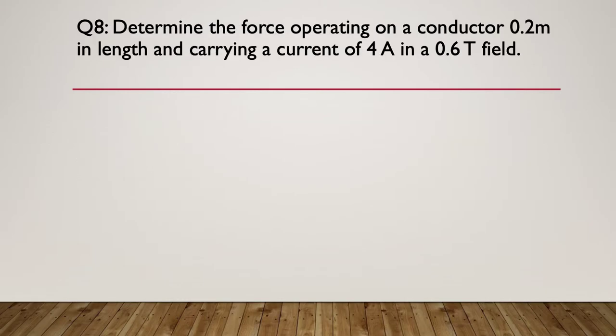Question eight. Determine the force operating on a conductor that is 0.2 metres in length, carrying a current of 4 amps, in a 0.6 tesla field. A little bit of a calculation here — think about what formula you need and pause here.